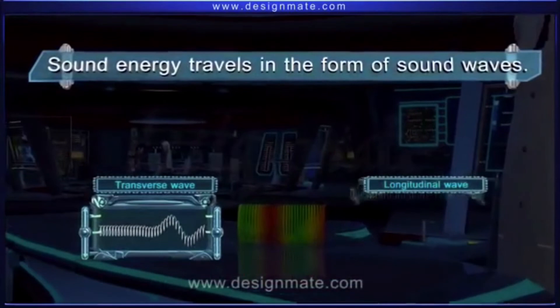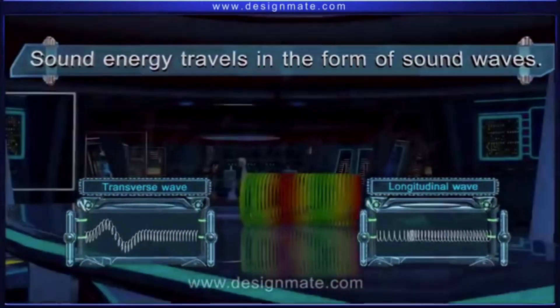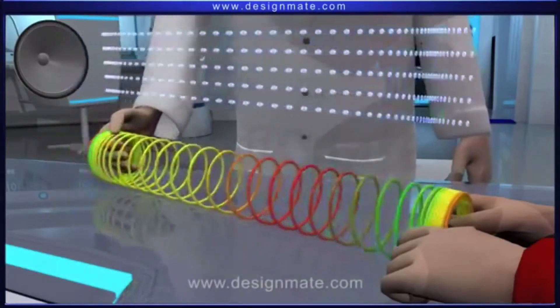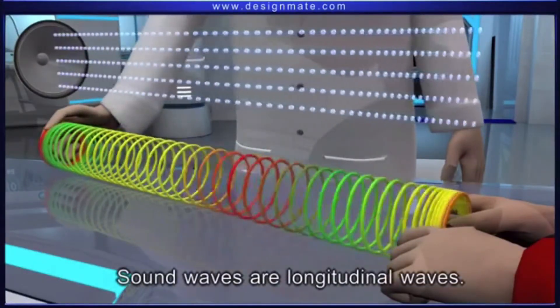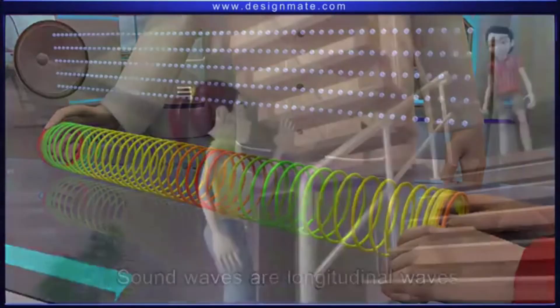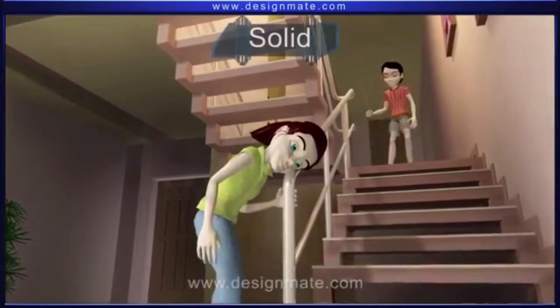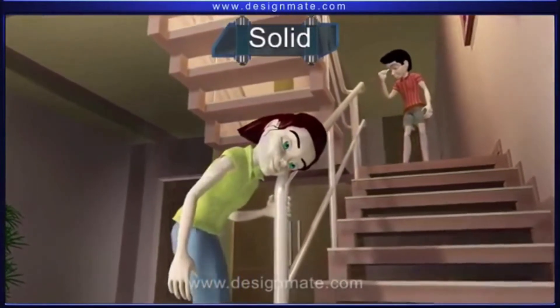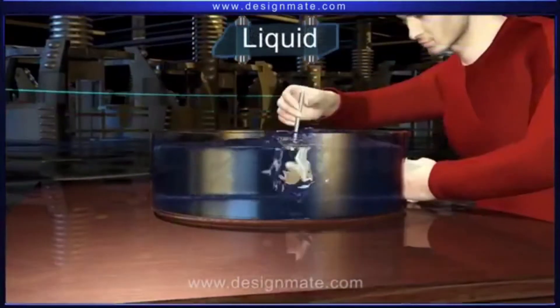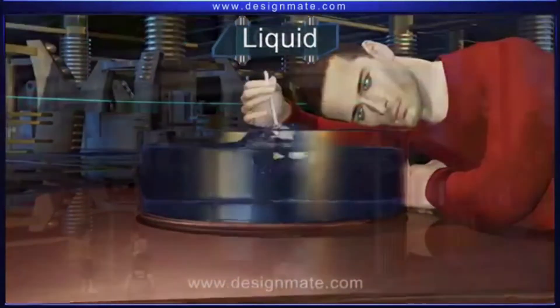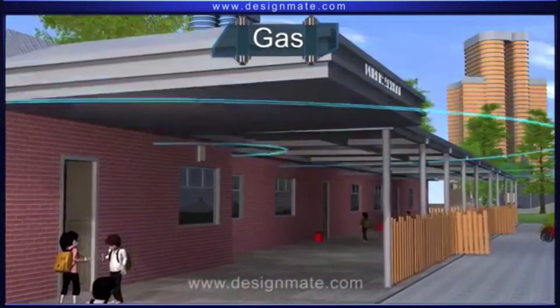Sound energy travels in the form of sound waves. There are mainly two types of waves. Transverse wave and longitudinal wave. Let us see how waves travel. This is a longitudinal wave. Sound waves are longitudinal waves. These waves travel at different speeds in different mediums. The medium could be a solid, liquid, or gas. Now let's see how this works.